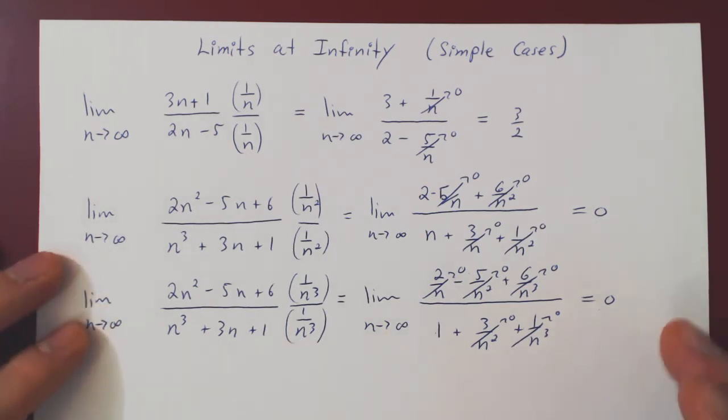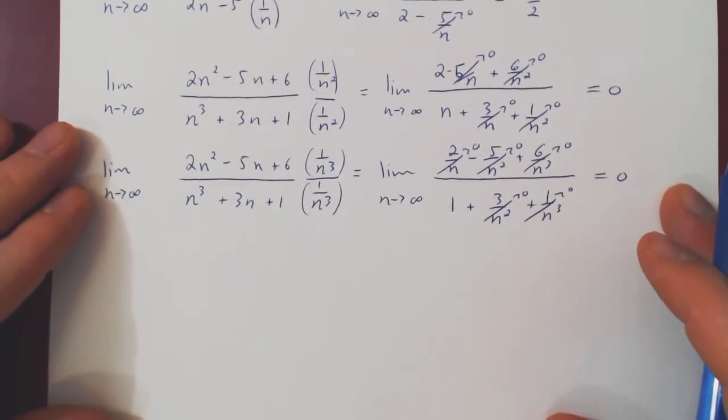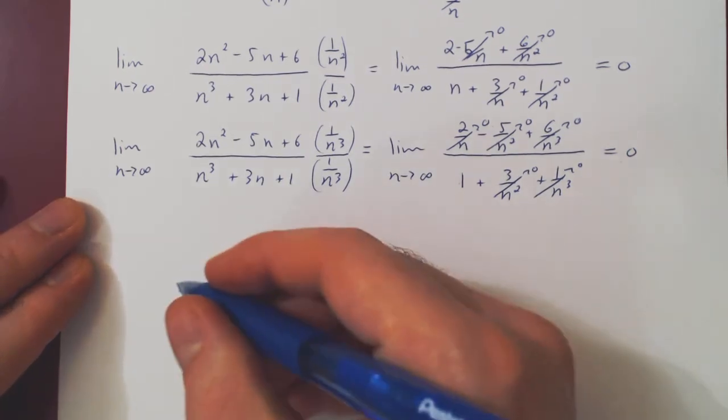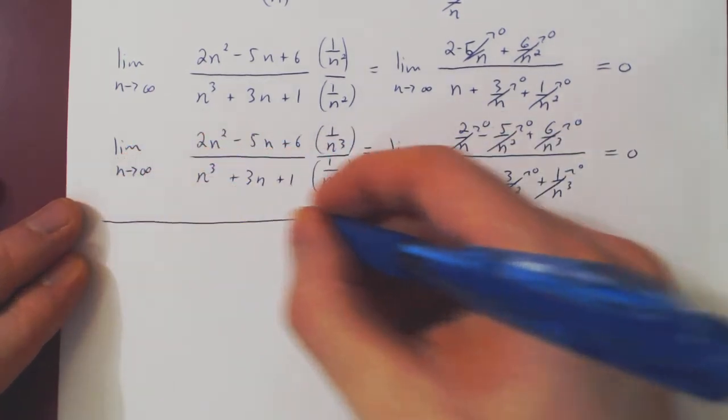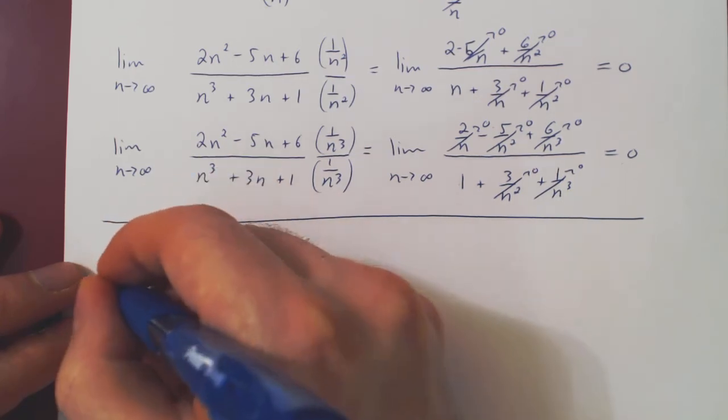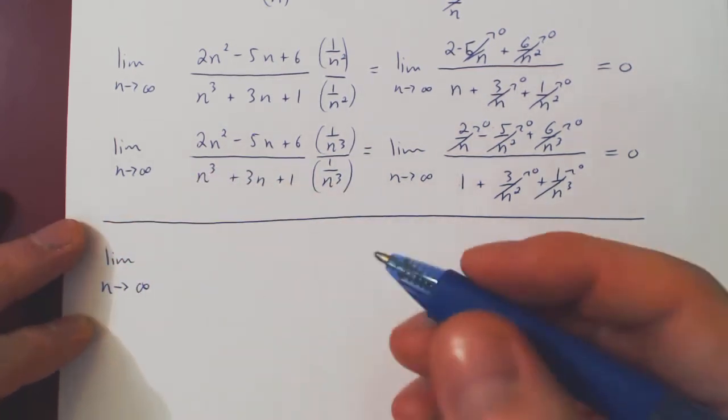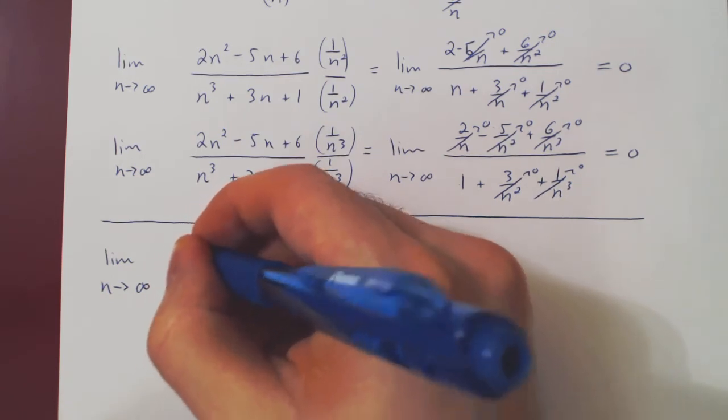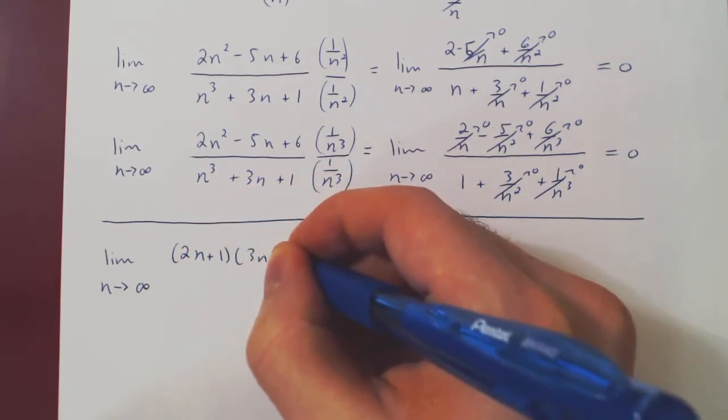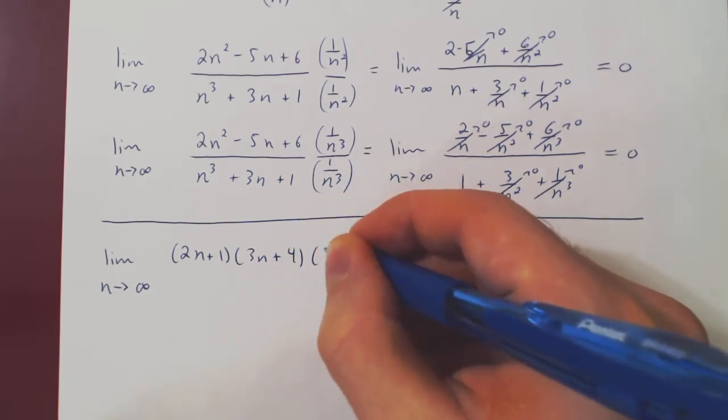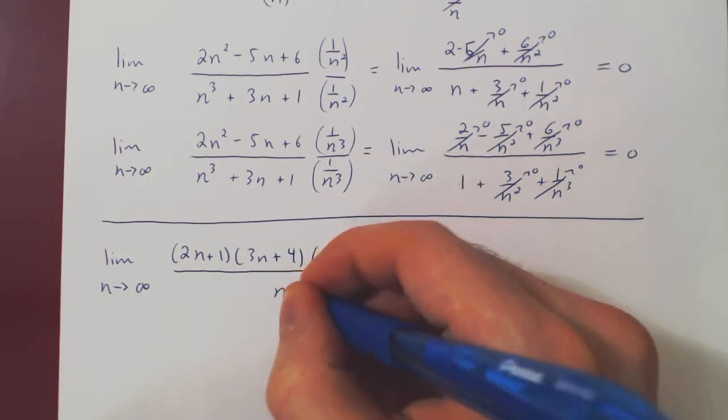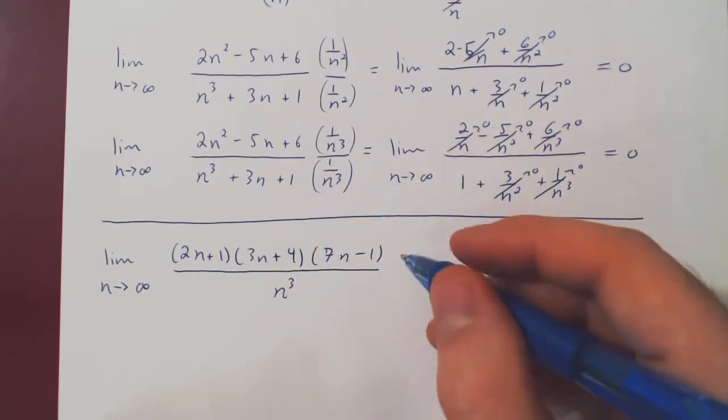When things are factored, don't multiply them out unless you absolutely have no other options. Let me show you why, or what I mean by this. Suppose I give you the limit as n goes to infinity of 2n plus 1 times 3n plus 4 times 7n minus 1 over n cubed.